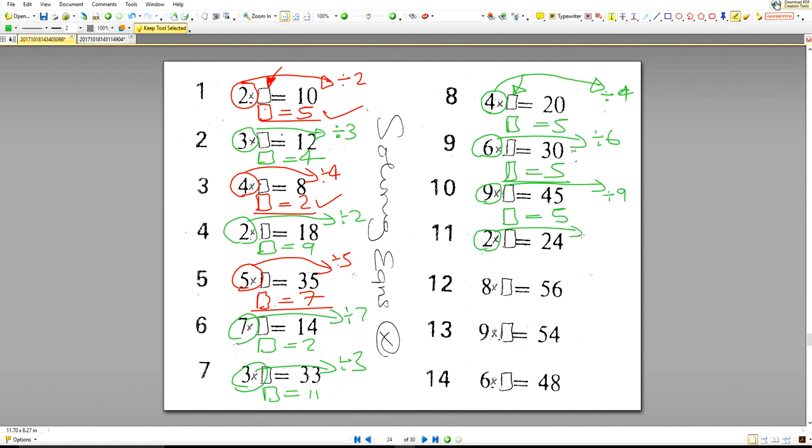So opposite of times by two is divide by two. So the box is equal to 12. So eight times by the box is 56. Opposite of times by eight is divide by eight. So the box is equal to seven. Opposite of times by nine is divide by nine. Let's divide by nine. So the box is equal to six.